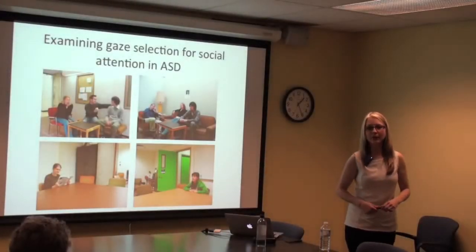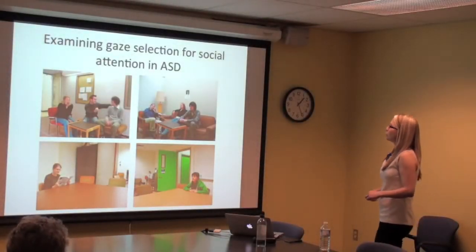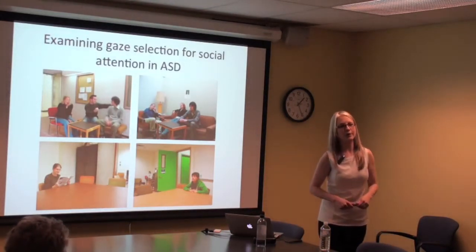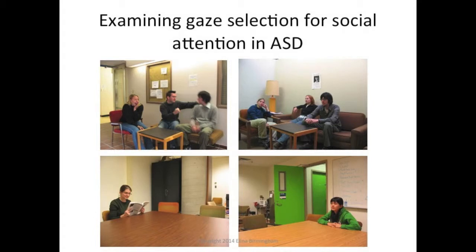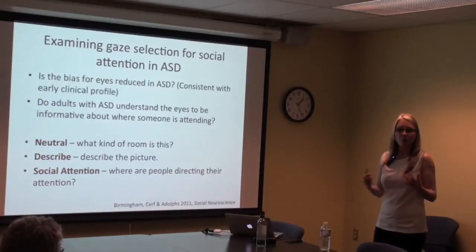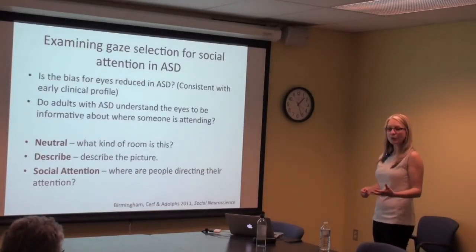I then applied the same approach to people with ASD, because it was not clear whether they would show this same pattern of using eyes as a source of attentional information. The questions were: is the overall bias to look at eyes reduced in autism? Do people with ASD understand that eyes carry important information about where others are directing their attention? Do they actually use that information?